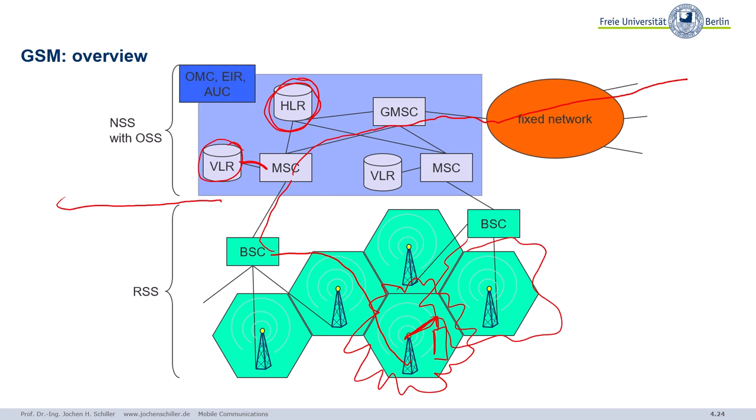Additionally we need some more databases, like a so-called Equipment Identity Register (EIR). We need some centers like an Authentication Center (AuC) and an Operation and Maintenance Center (OMC). So this is a very abstract view of the system, but again you should be able to repeat this architecture and explain the components. So: radio subsystem, network subsystem, and additionally the operation maintenance center, equipment identity register, authentication center — these form the operation maintenance subsystem, used for the operator to keep the network up and running.